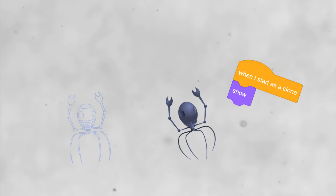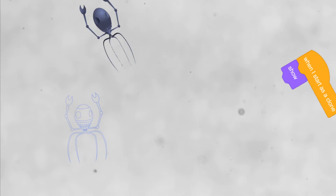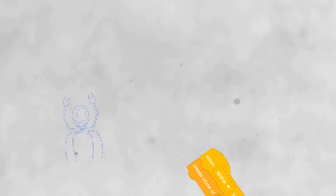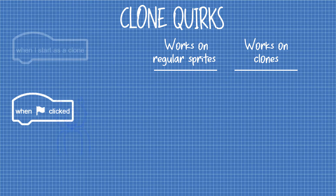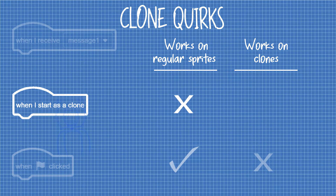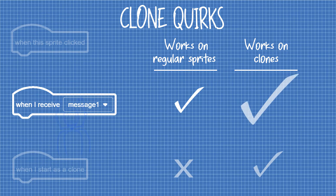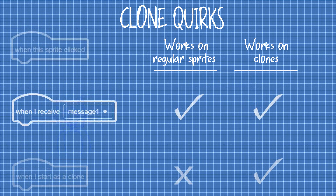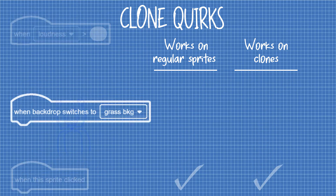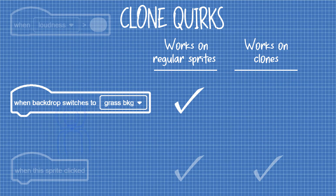Be very cautious if you're using a keyboard command to make new clones. Remember that the green flag block only works on your original sprite, and the "when I start as clone" block only works on clones. But other hat blocks work on both the original sprite and the clone.